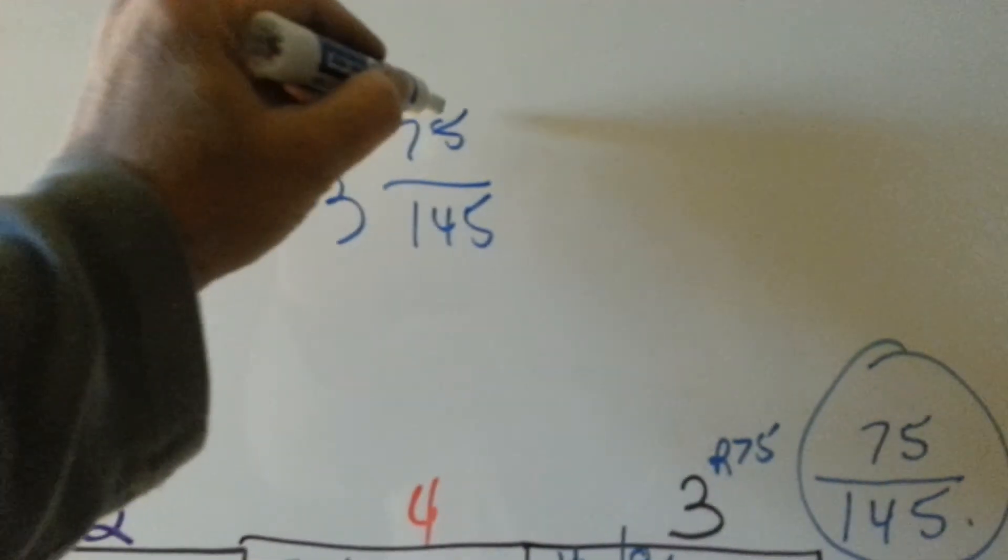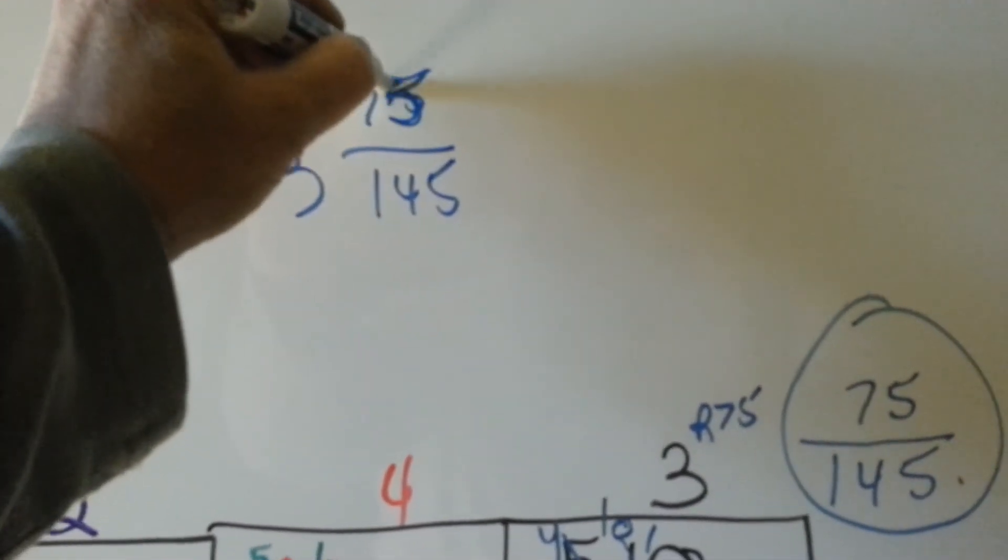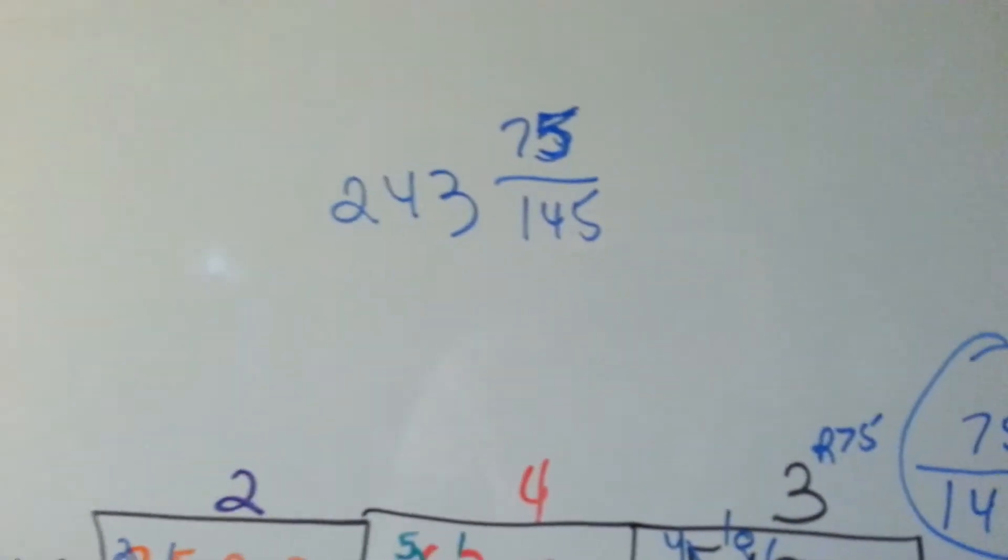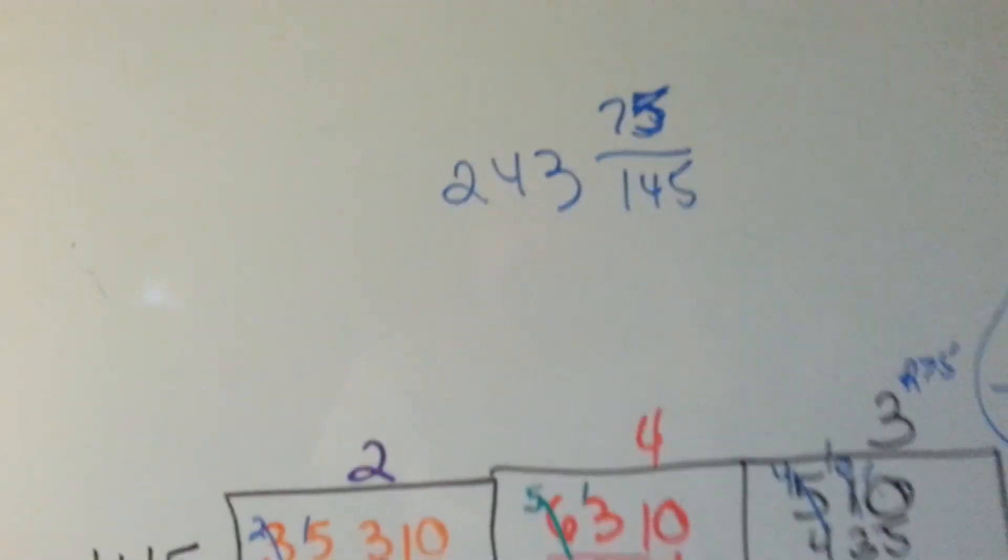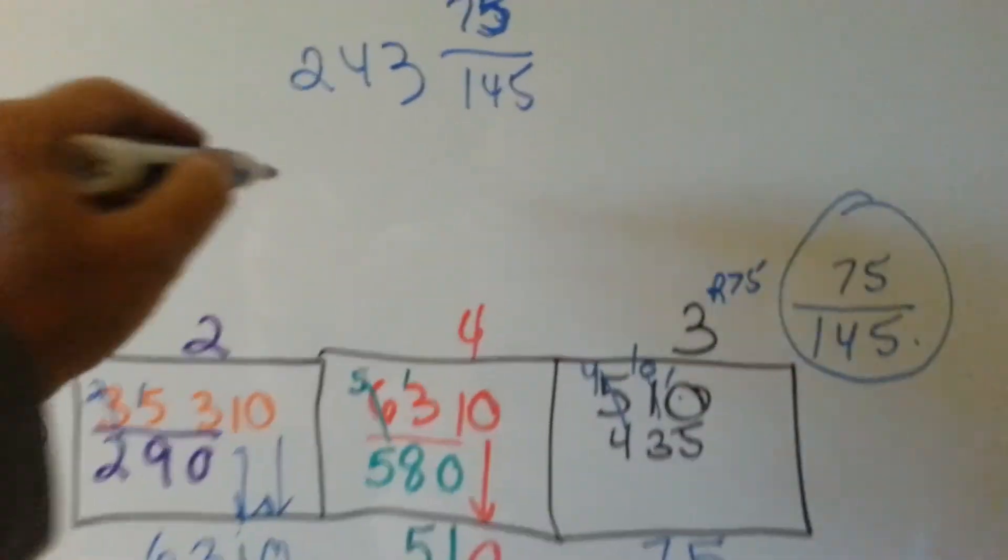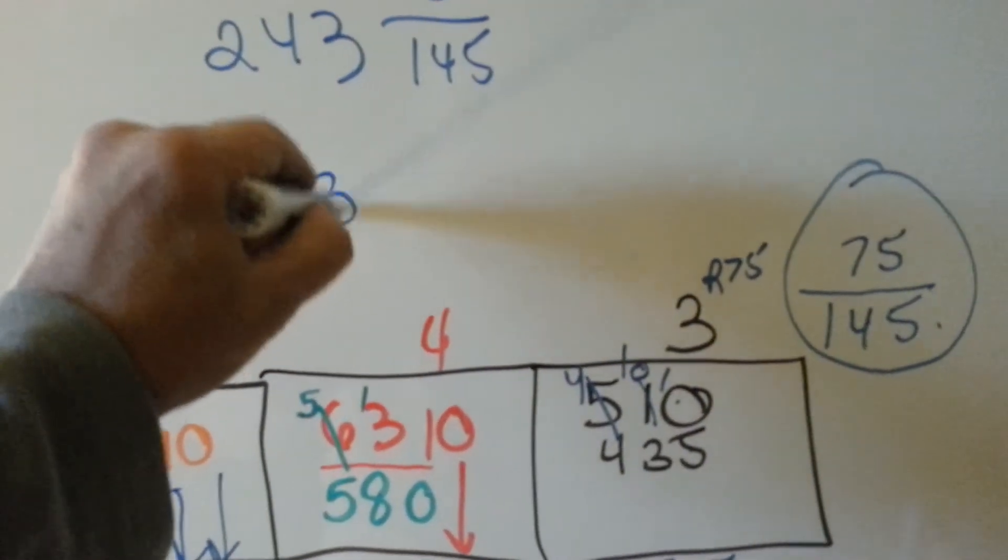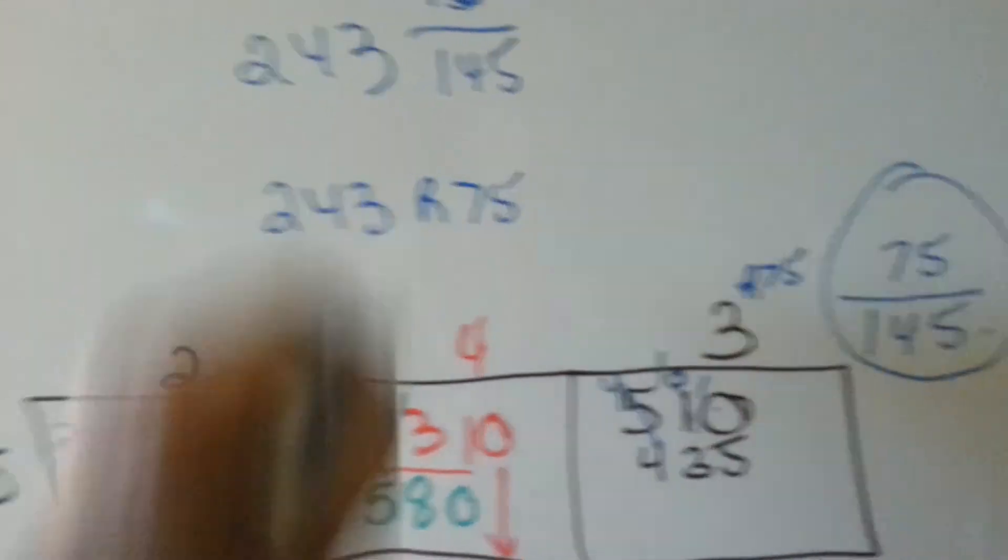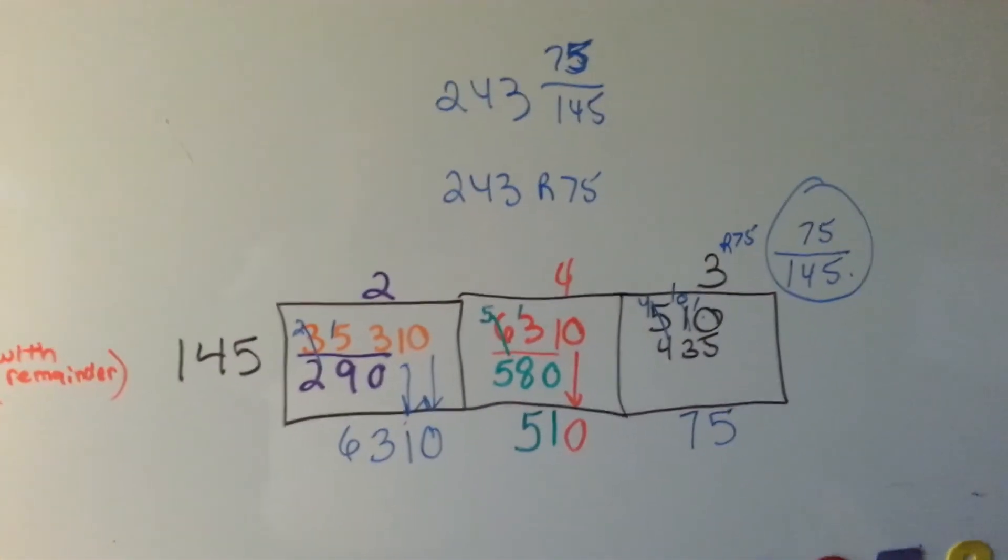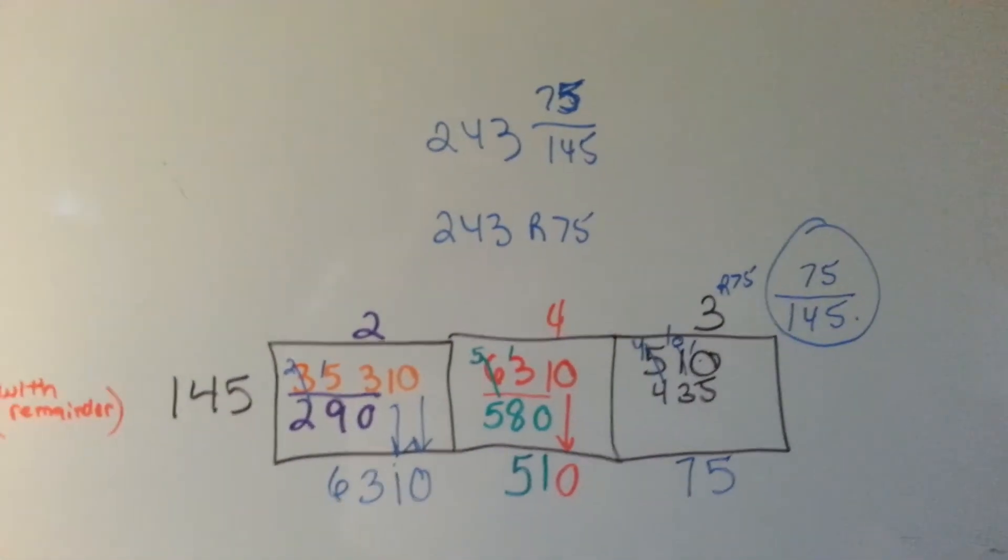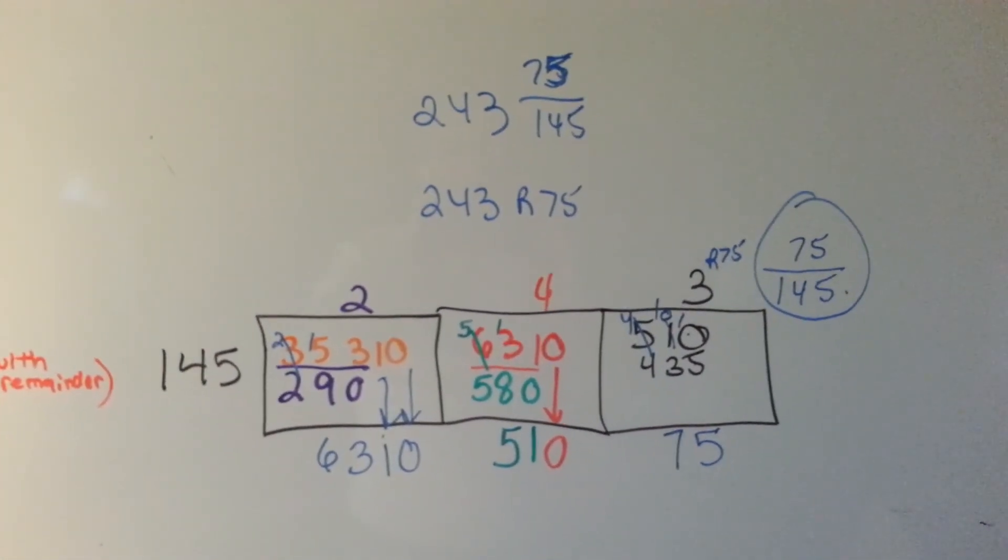and 75 145ths. See? And if you know your fractions, you know that the 75 145ths can be made a little bit smaller. But I'm not going to get into that right now. But that would be a remainder 75. Either way. Either way would be the right way to do this one. I hope this helps. See you next time.